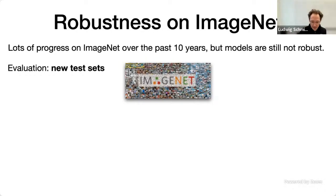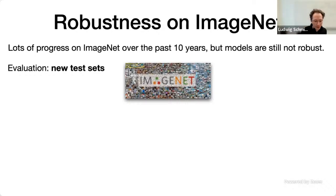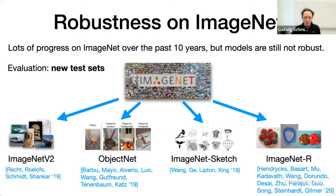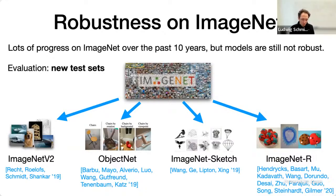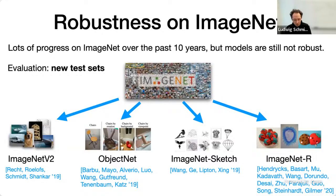Specifically in the context of robustness, ImageNet has always been fertile ground for experimentation. Many people have instantiated the challenge: how can we make machine learning more robust in the context of ImageNet? There's a widely used ImageNet test set, but when you deploy these models in the real world and apply them on a new test set, there's often a substantial drop in performance, even on images that look fine to a human. Various research groups have proposed different out-of-distribution test sets for ImageNet, including ImageNet V2, ObjectNet, ImageNet Sketch, and ImageNet R.